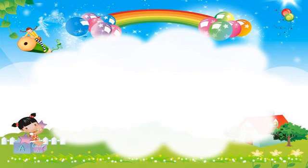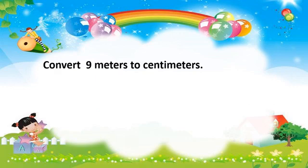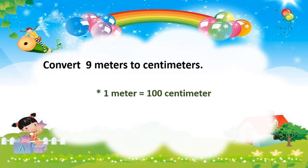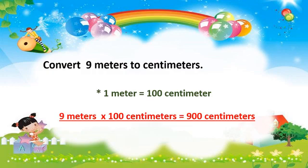Let's have another problem. Convert 9 meters to centimeters. Remember, 1 meter equals 100 centimeters. So we multiply 9 meters by 100 centimeters. The answer is 900 centimeters. 9 times 100 equals 900. Good job!